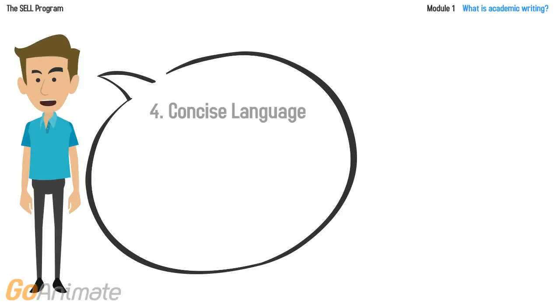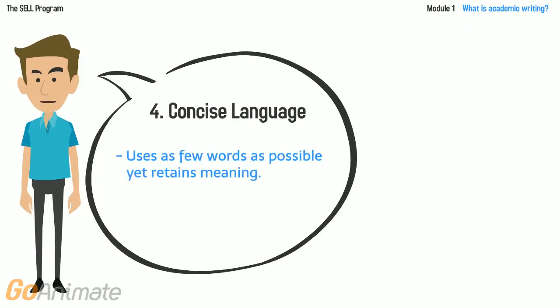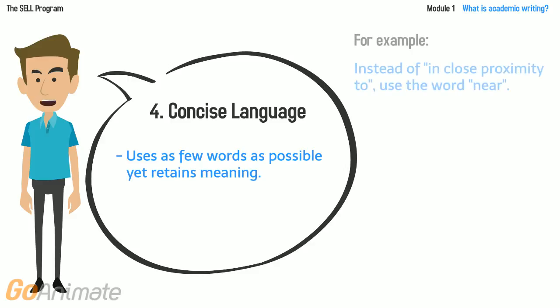Concise language uses as few words as possible yet retains meaning. For example, instead of "in close proximity to," use the word "near."